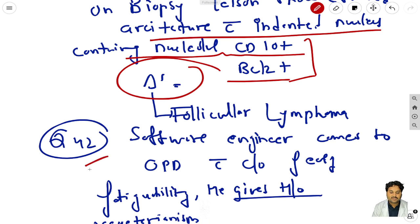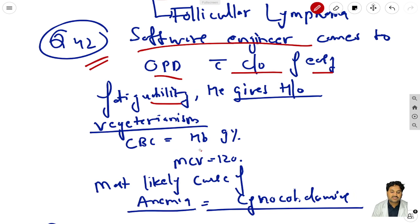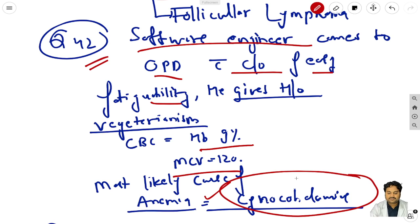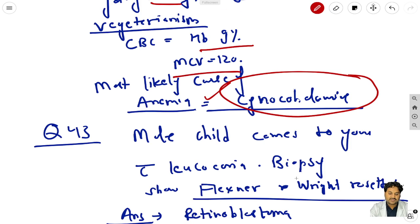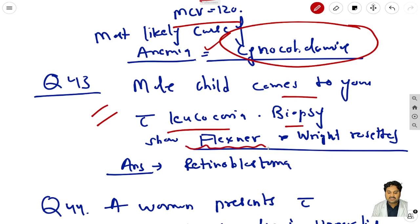Question 42: a software engineer comes to OPD with easy fatigability and gives history of being a pure vegetarian. CBC shows hemoglobin 9 and MCV 120 - the most common cause of anemia is cyanocobalamin (Vitamin B12) deficiency. Question 43: a male child comes with leukocoria and biopsy shows Flexner-Wintersteiner rosettes - the answer is retinoblastoma.